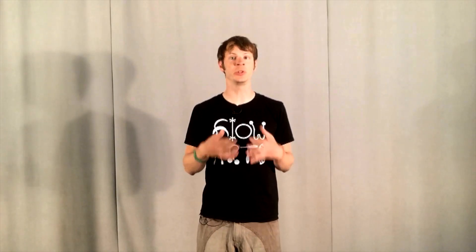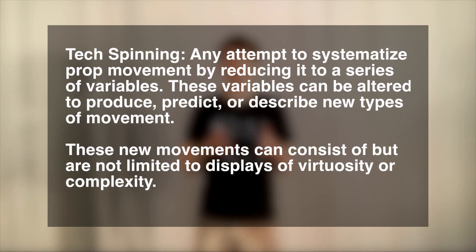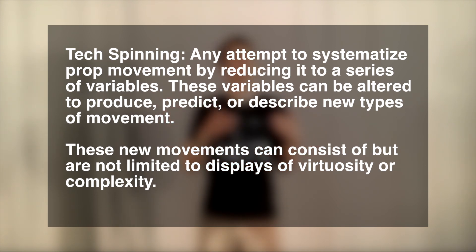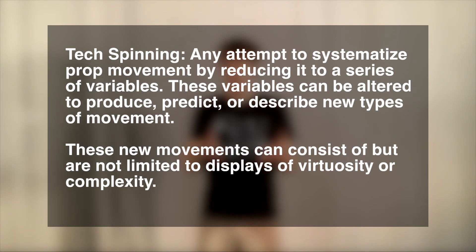To a lot of people, the term tech is synonymous with difficulty or complexity, but I'd prefer to think of it this way. Tech is a style of spinning that seeks to systematize movement by reducing it down to a series of variables. These variables can be altered to produce, predict, or describe new types of movement. These new movements can be, but are not limited to, displays of virtuosity or complexity. The real essence of tech spinning is to take a move you already know and try to break it apart to see what you can change to produce something that is just a little bit different.